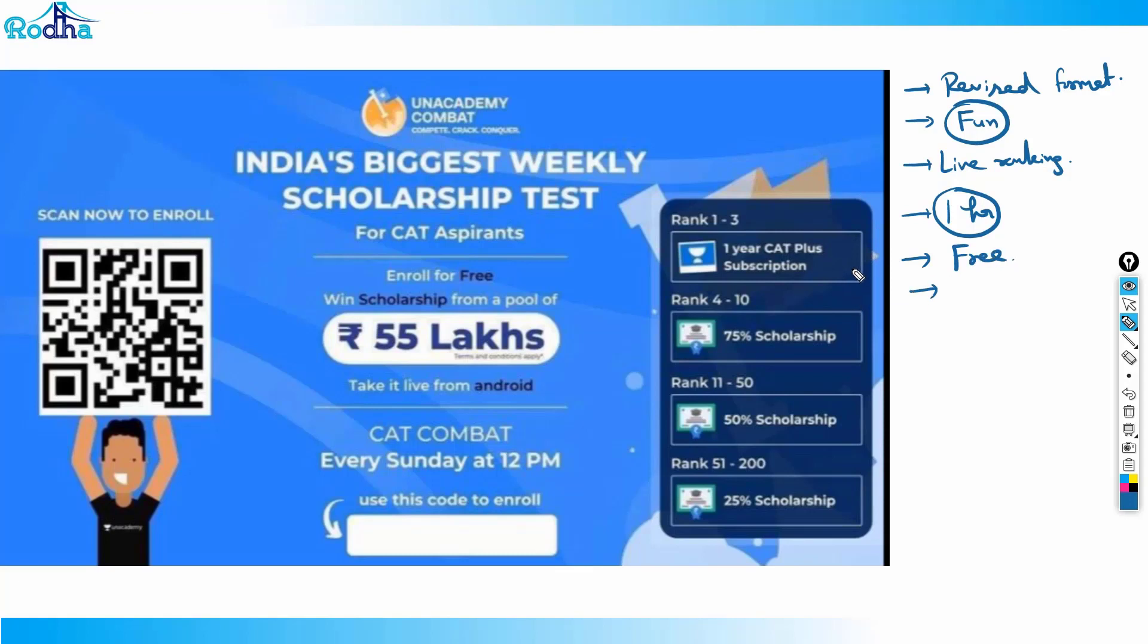From earlier it was not that rewarding, but now they have introduced some great rewards. Rank 1, 2, 3 get one year subscription I think around 20,000 or 75% scholarship or 50%. Those are great prizes on offer here. Get it live from your mobile app. You just put in the link, this invite code you can put here - Ravi Roda. It'll ask you for invite code, it is absolutely free of cost. Ask you for invite code, put Ravi Roda and the link I'll put in description. Just enroll from there and do give this every Sunday at 12 PM.